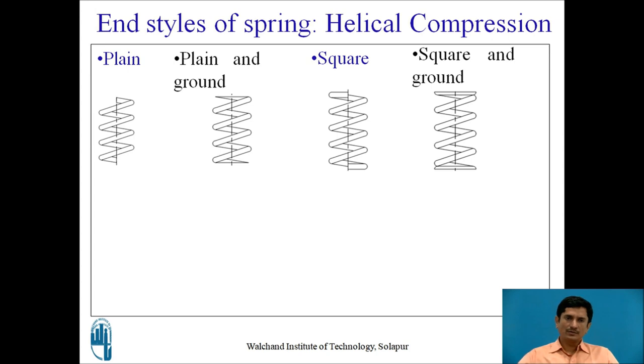We can see that for the first one the ends are sharp, those are ground and it is now flat, third is the squared end where the section of the wire is perpendicular to the spring axis, and the last is squared end ground.